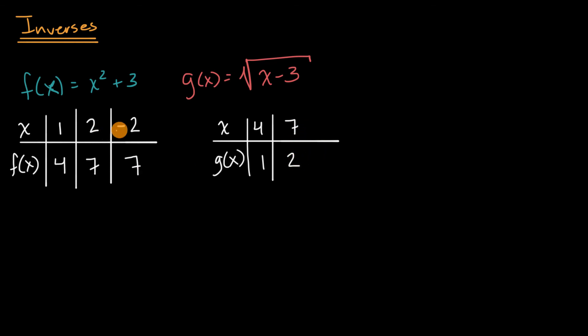In fact, there's no way to get negative two out of this function right over here. So we have just found a case and frankly, any negative number that you try to use would be a case where you can show that these are not inverses of each other, not inverses.